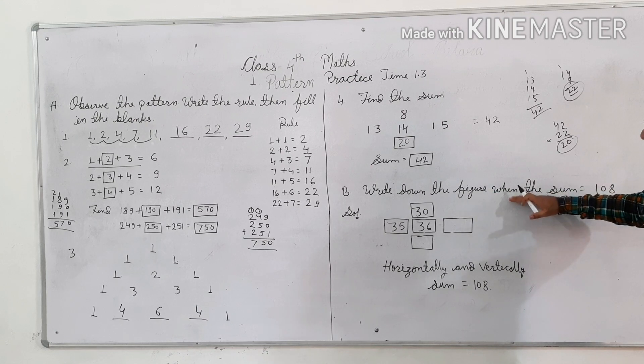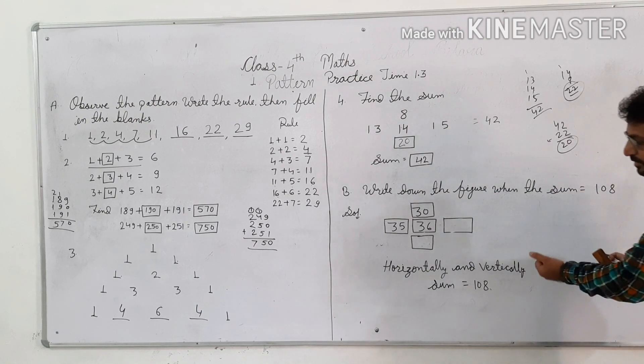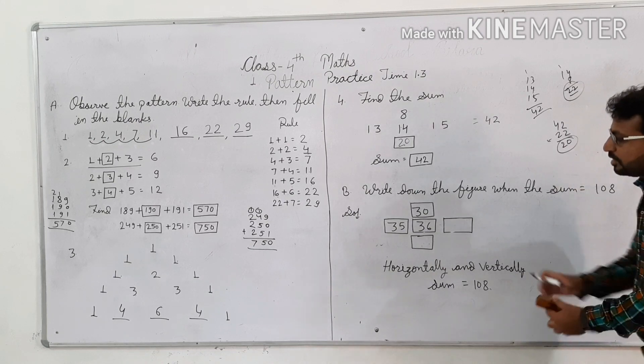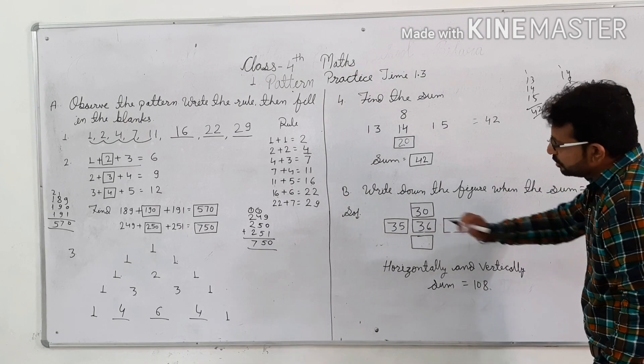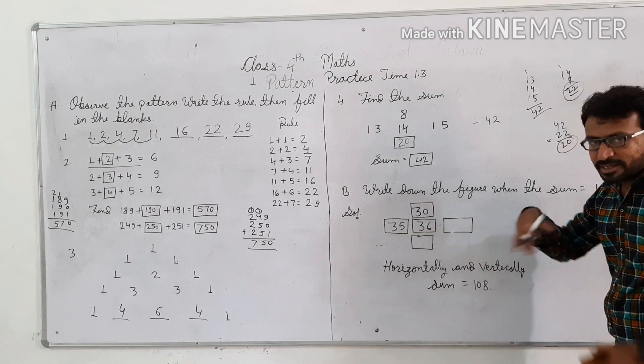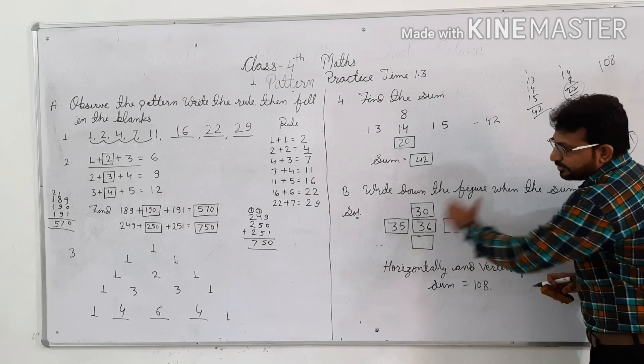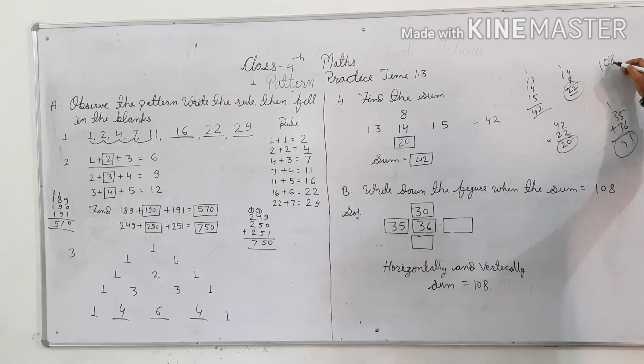Next one, write down the figure when the sum is 108. So if we have to get into 108, we will consider 108. We will have to be equal to 108. So what is the sum? By this time we will have to get into 108.